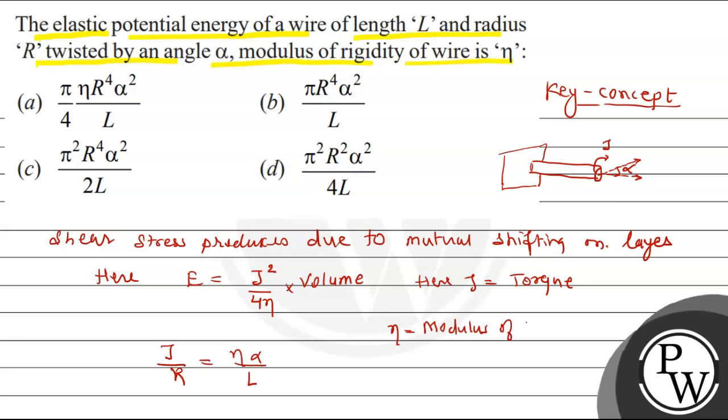Where eta is modulus of rigidity, R is radius, L is length, and alpha is angle of twist.